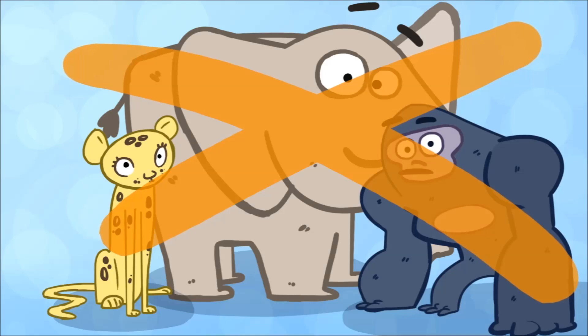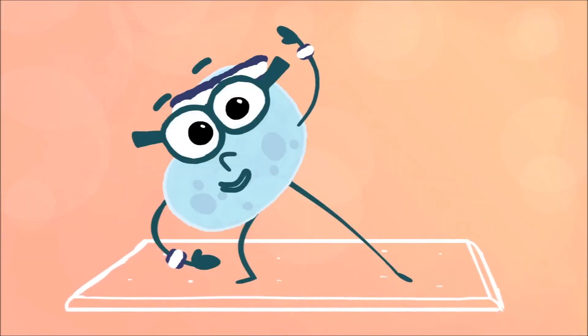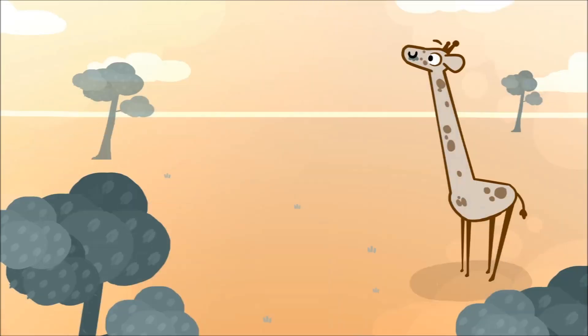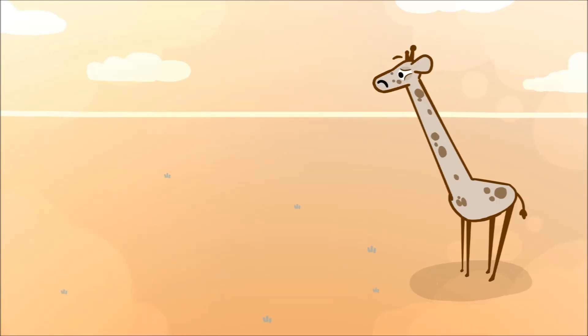For one thing, evolutionary fitness is just a matter of how well-suited they are to their current environment. If all the tall trees suddenly died out and only short grass was left, all those long-necked giraffes would be at a disadvantage.